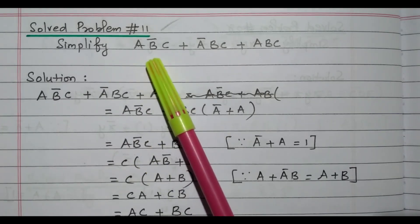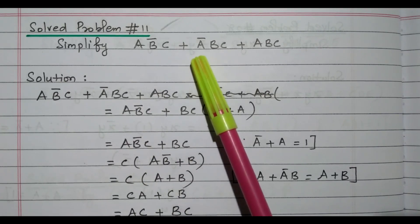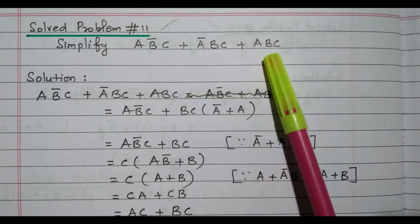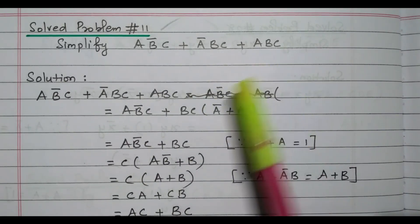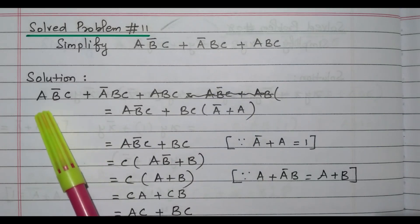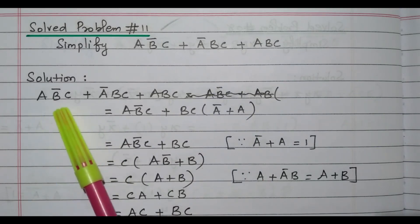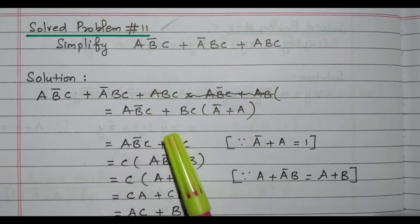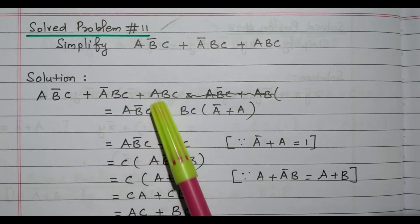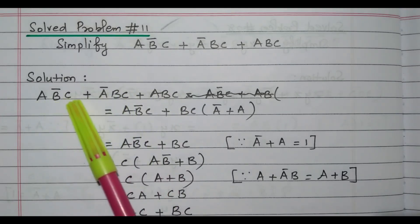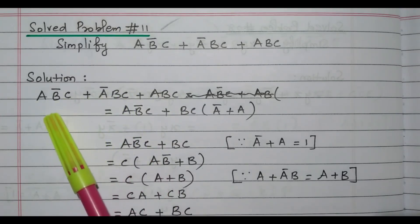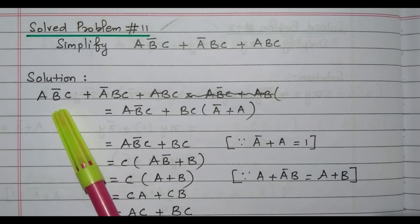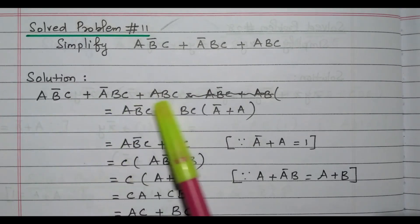The second problem is given as: abc̄ + ābc + abc. We need to simplify this expression. It can be written as: abc̄ + ābc + abc. There are three terms, all having three variables. We'll try to take three variables or at least two variables outside.